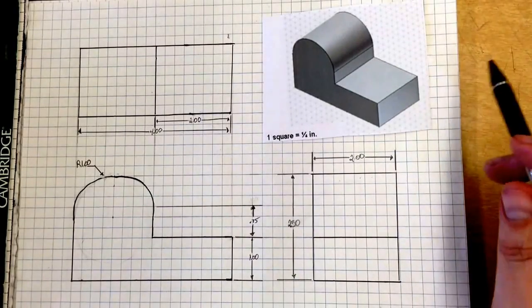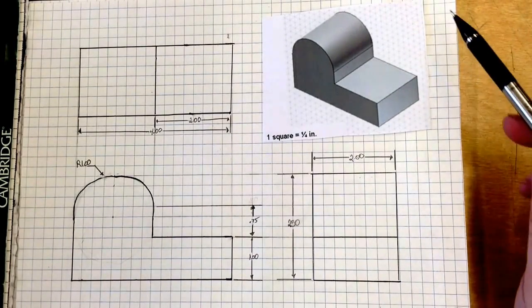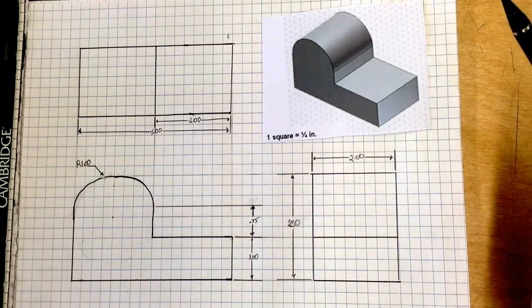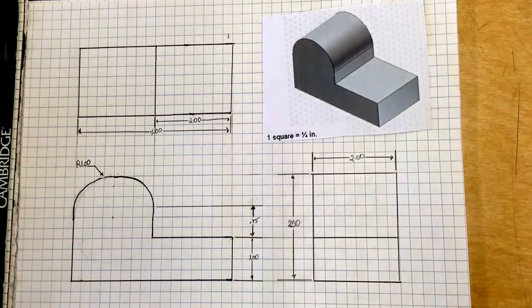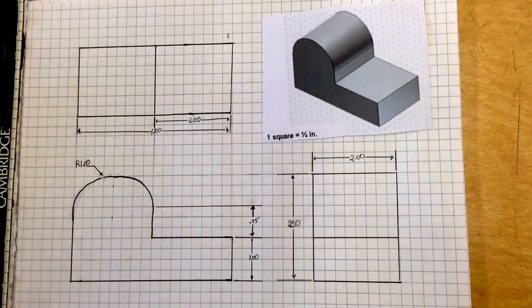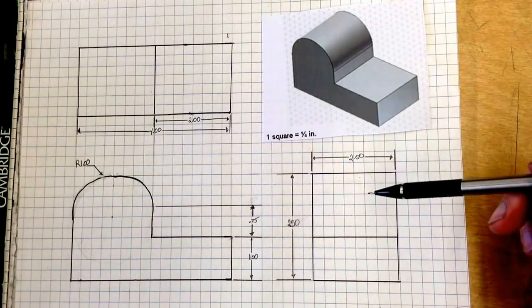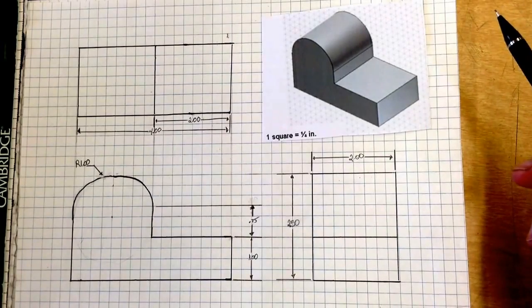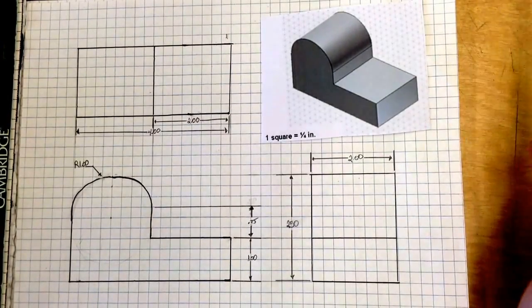We have previously drawn out this object in isometric and multi-view in previous videos. And right now we're going to concentrate on actually dimensioning this. So if you just need to see what the object looks like with dimensions, stop the video right now so you can check it all out. If you need to see how to do it, continue watching.